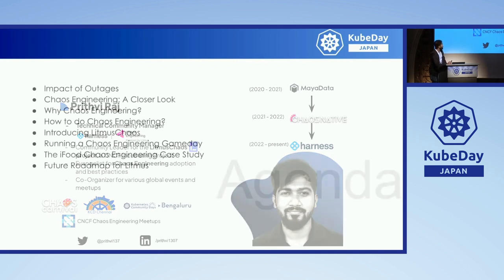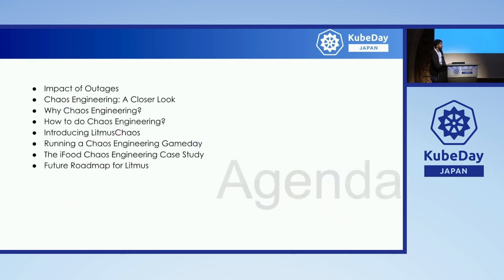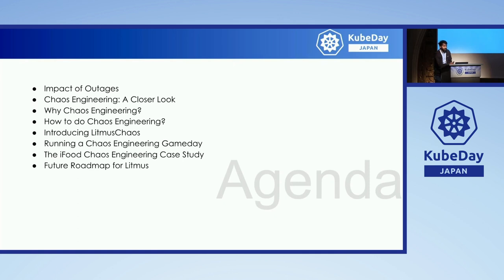Moving on, let's take a look at the agenda. We'll be talking about outages, and then we'll take a closer look at chaos engineering — why chaos engineering, how you can get started, and why it's important for you. We'll also look at running a chaos engineering game day, followed by a short case study on iFood, which is one of the adopters of Litmus, and lastly, how you can be part of and contribute to the community.